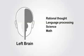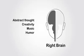I'm going to show you exactly what I'm talking about, and it'll blow your mind. Remember that your brain's two halves have specific functions. The left side of your brain is used for rational thought, language processing, science, and math. The right side of your brain is used for abstract thought, creativity, music, the arts, and humor.